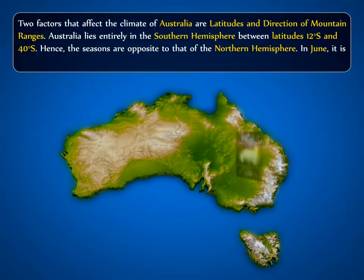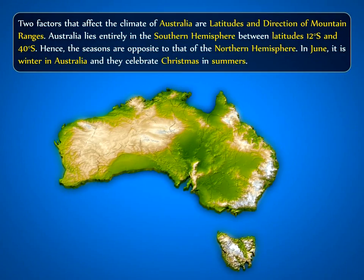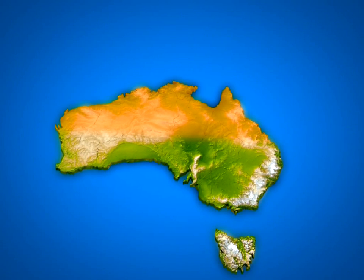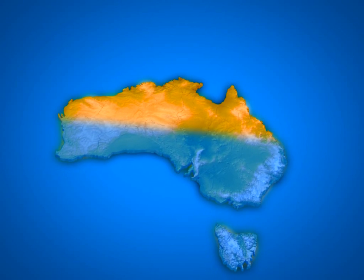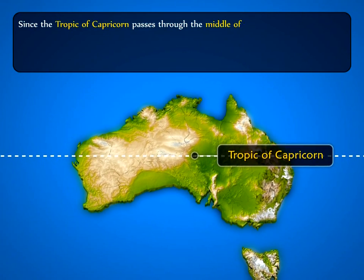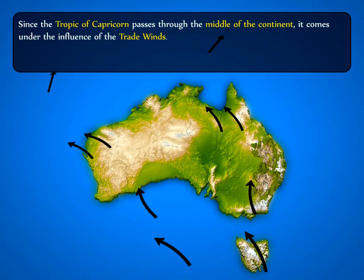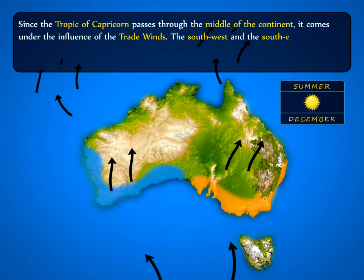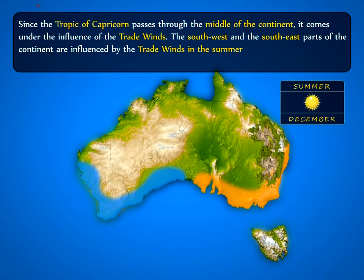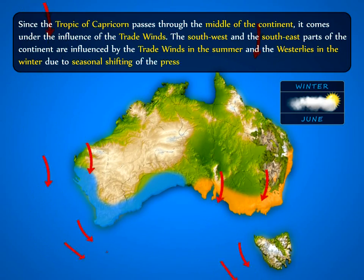In June, it is winter in Australia and they celebrate Christmas in summers. The northern part of Australia is closer to the equator and is hotter than the southern part. Since the Tropic of Capricorn passes through the middle of the continent, it comes under the influence of the trade winds. The southwest and southeast parts are influenced by the trade winds in summer and the westerlies in winter due to seasonal shifting of the pressure belts.